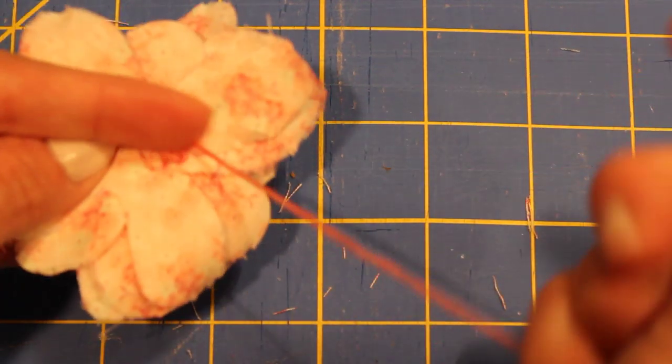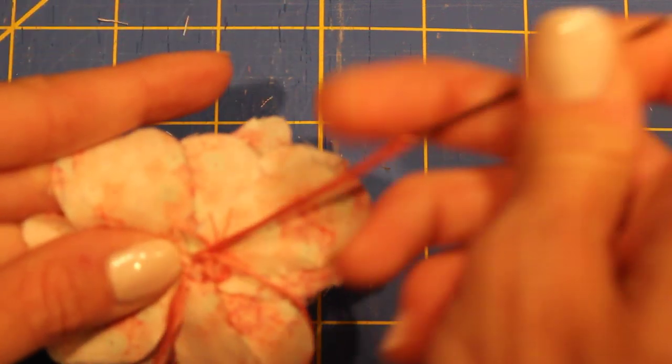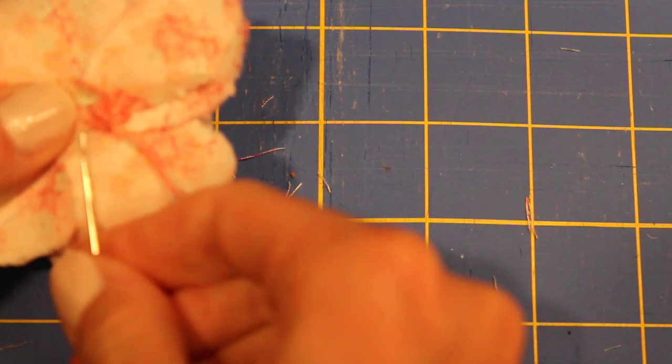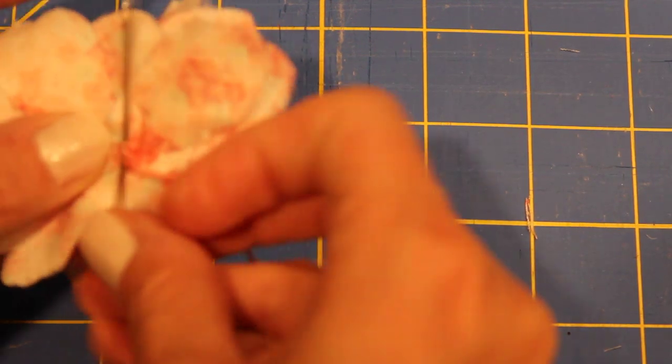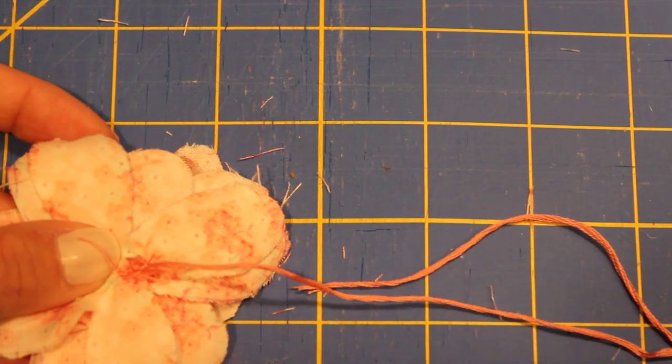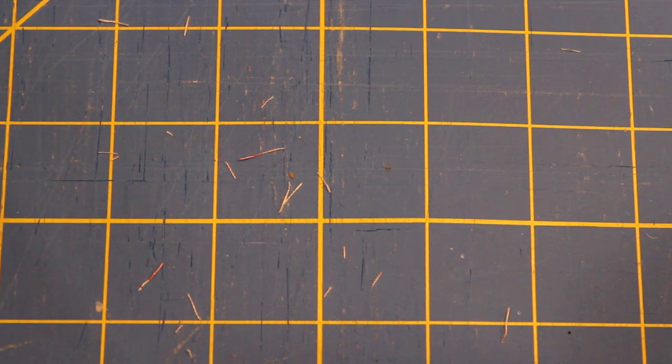There we go. I'm going to knot it off in the back, sliding it under one of these loops here. It's an easy way to make a knot. And I'm going to do one more, just for safe measures. You're going to snip this, done with your needle and thread for that flower.